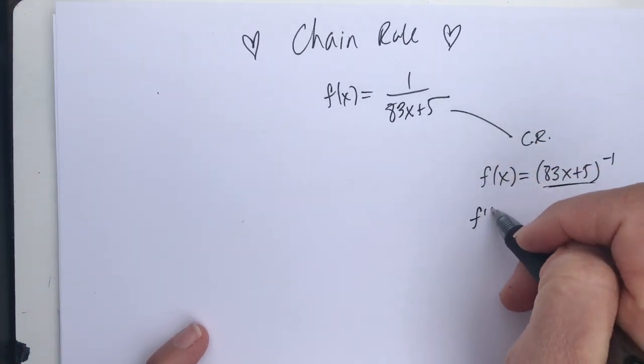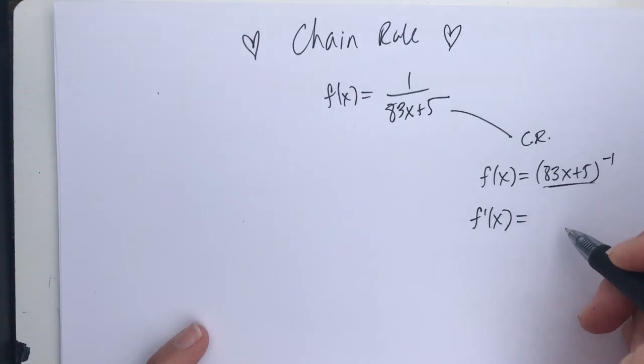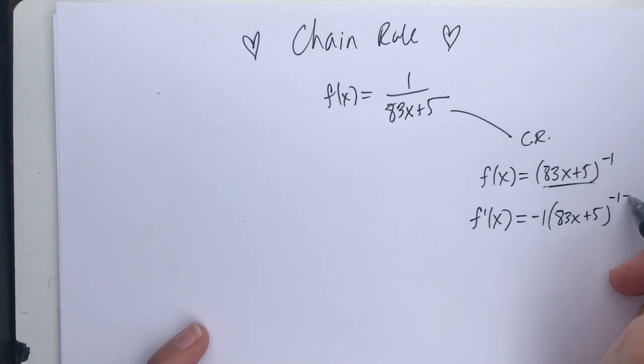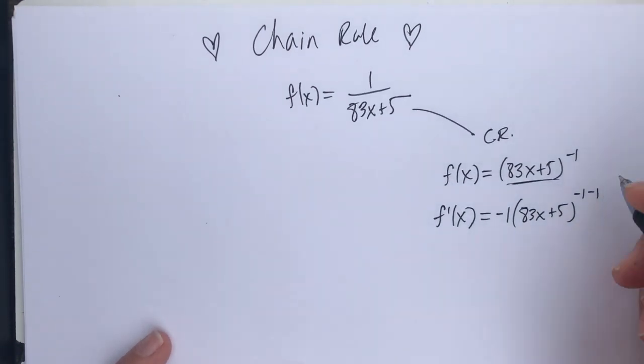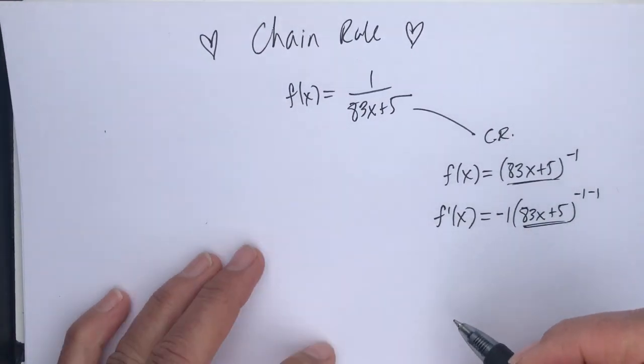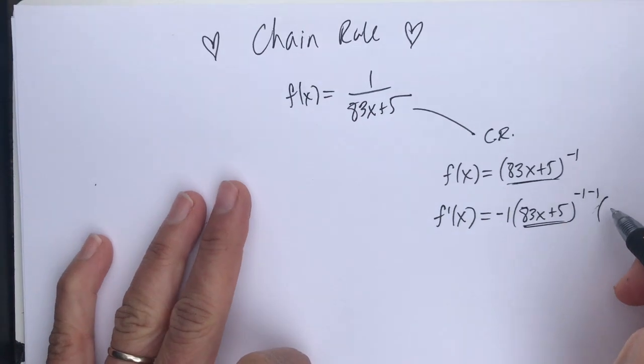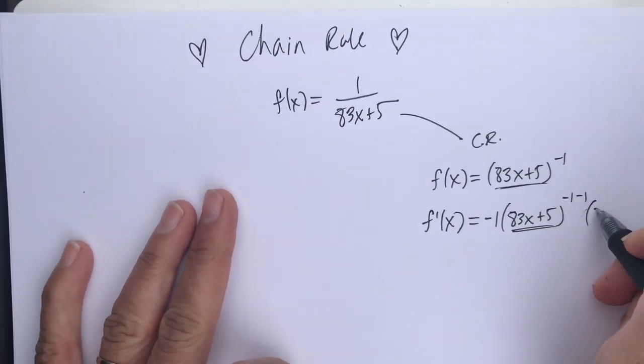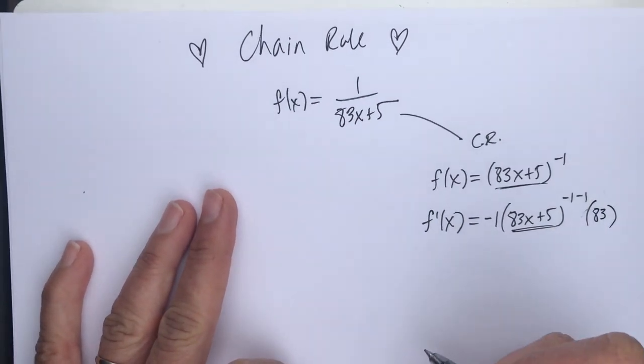Therefore, my derivative is the derivative of the outside function, so the negative 1 comes down, 83x plus 5 to the negative 1 minus 1. So I've taken the derivative of the outside function times the derivative of the inside function, where the inside function is 83x plus 5, so the derivative of that inside function is just going to be 83.